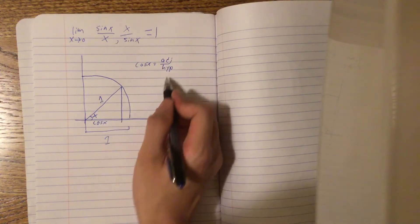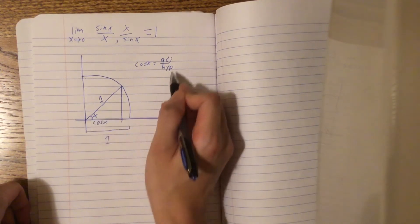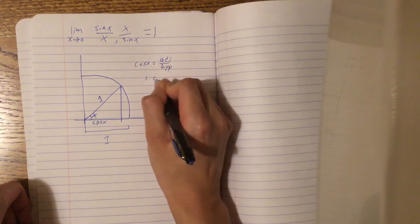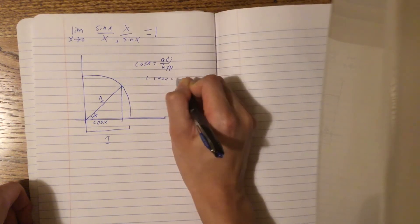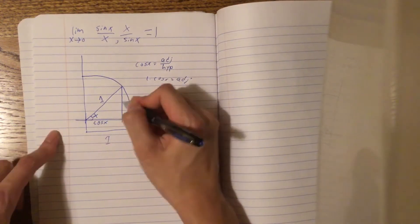This is cosine of x, and hypotenuse is 1, right? And this is adjacent. 1 times cosine of x is just the adjacent, so the adjacent just equals cosine of x.